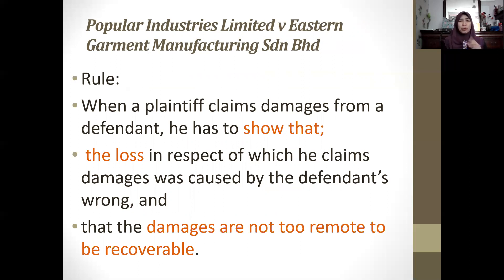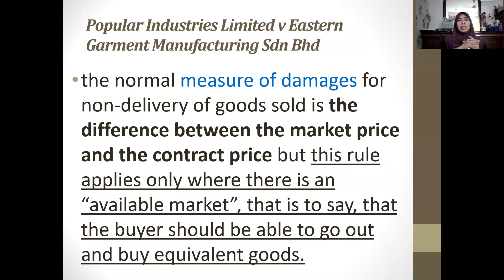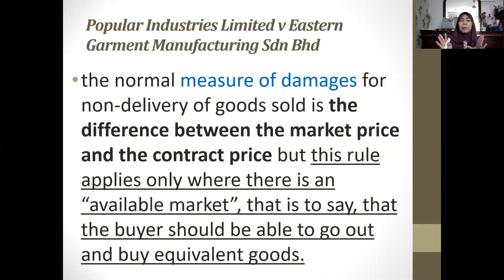The plaintiff must prove or show both causation and that damages are not too remote. In terms of measuring damages, the normal measure for non-delivery of goods sold is the difference between the market price and the contract price. This rule applies only where there is an available market — that is, where the buyer should be able to go out and buy equivalent goods as a replacement.